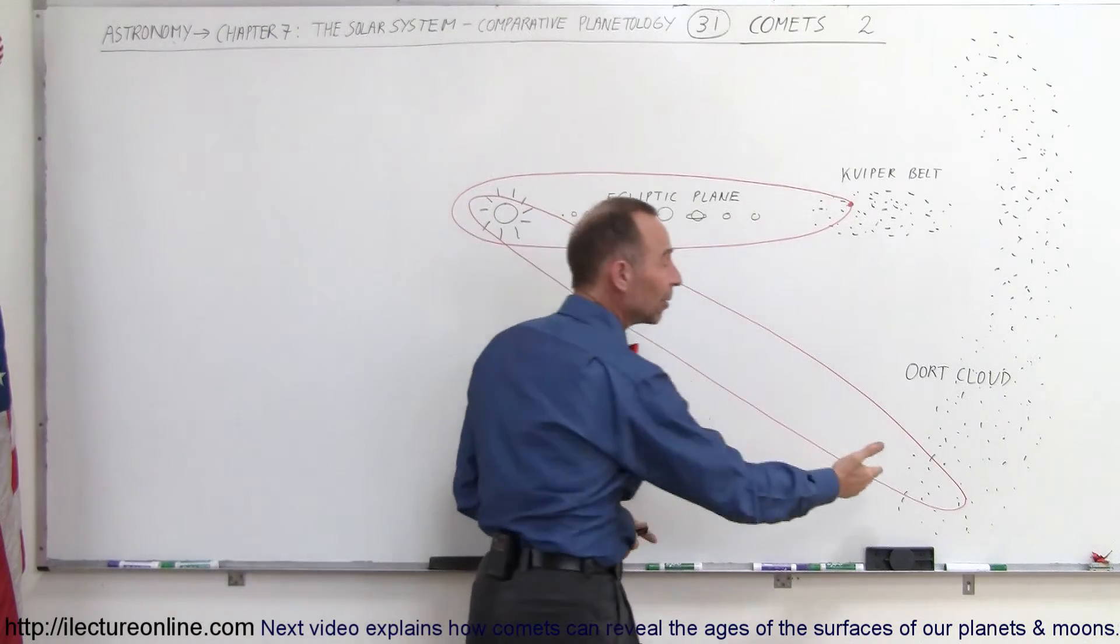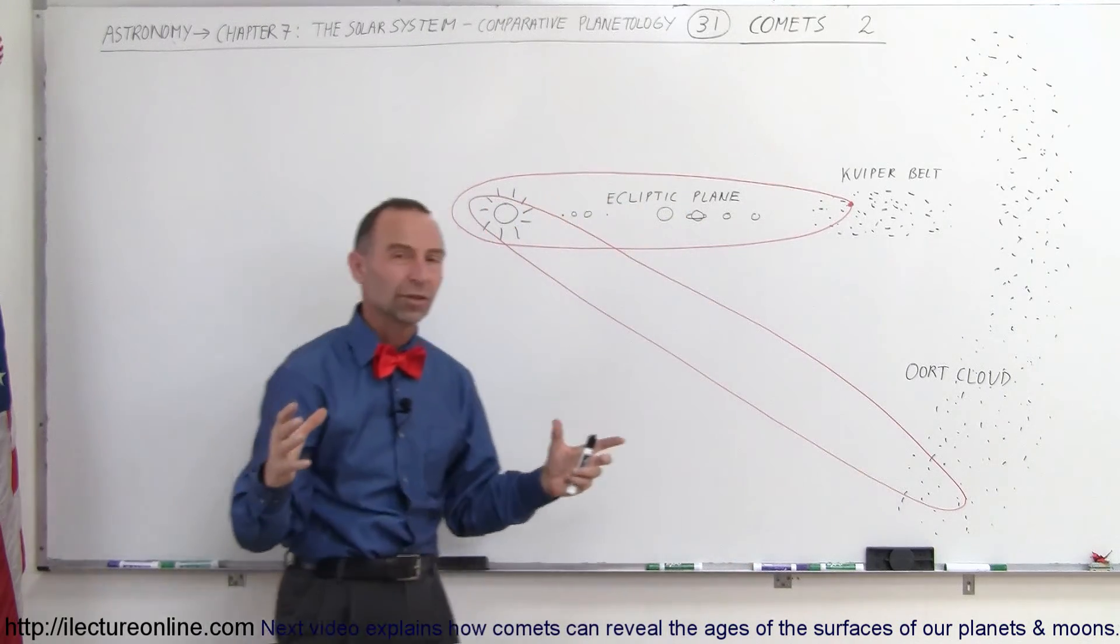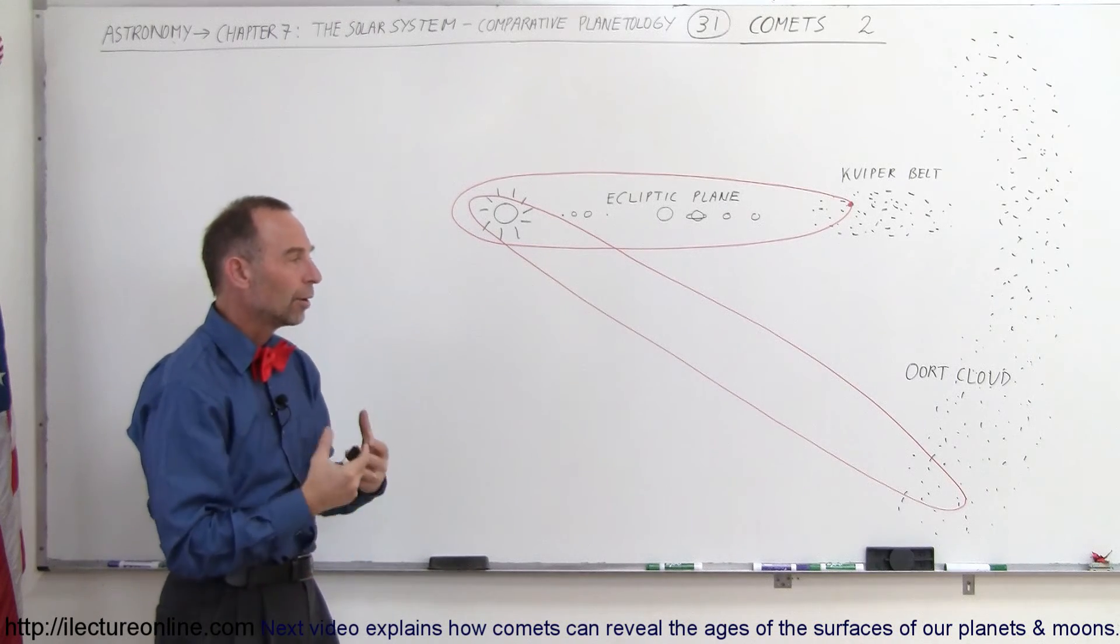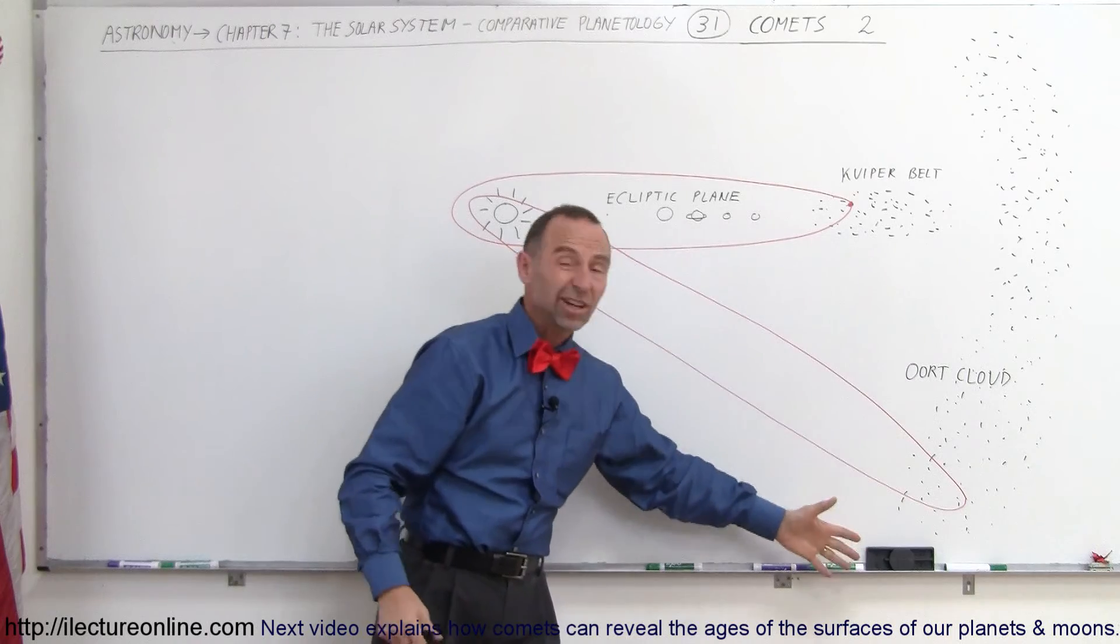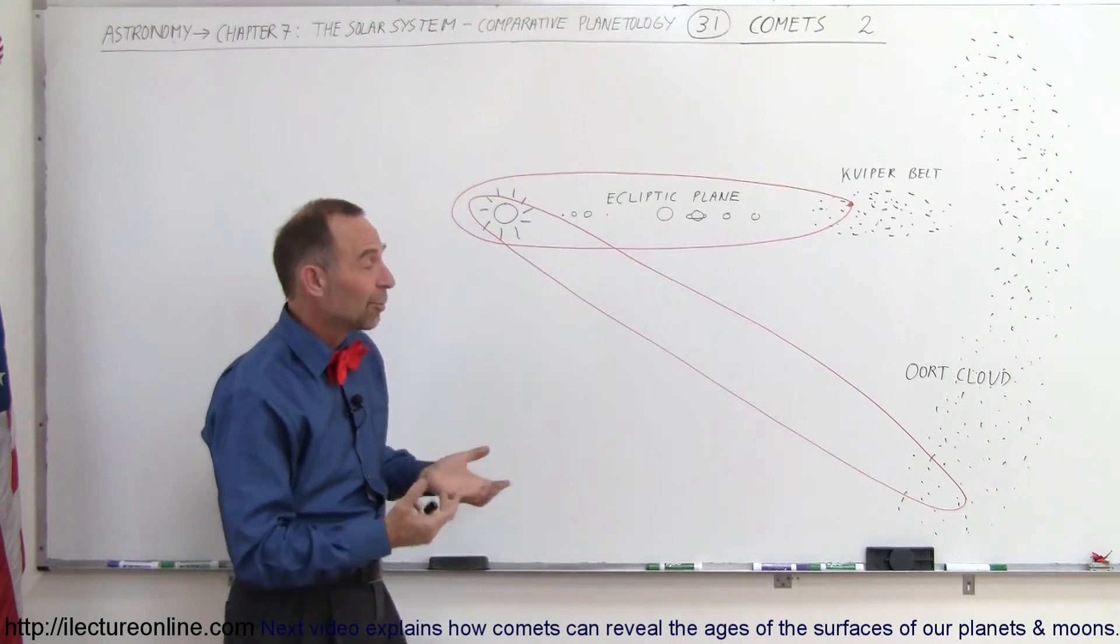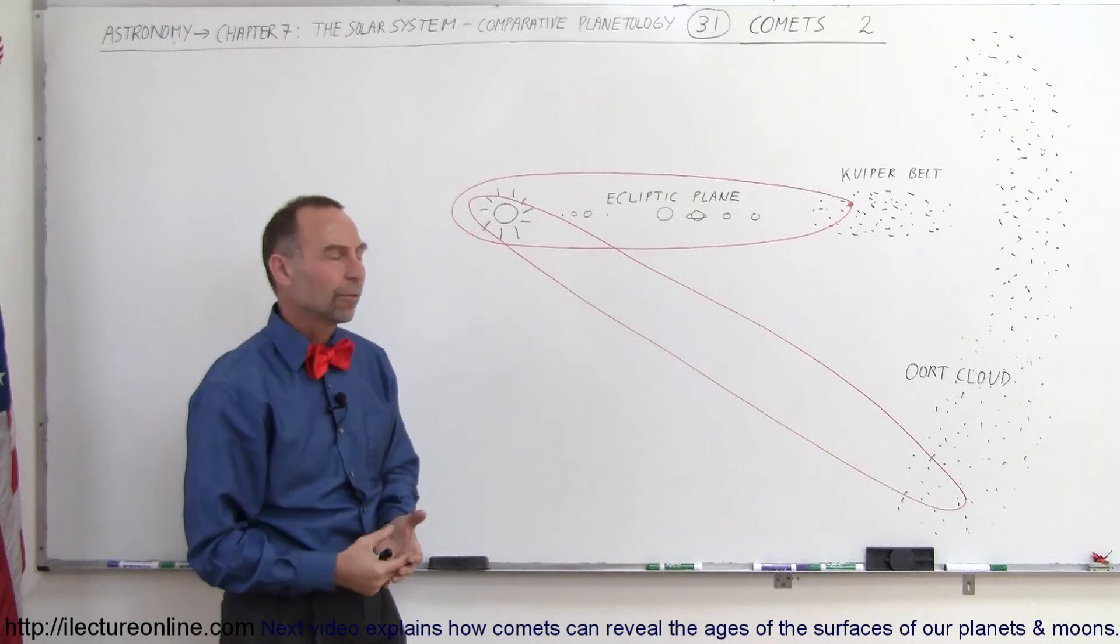And so comets then simply reveal that there's this vast region outside our inner Solar System where just billions and billions of these debris objects, that's probably the best way to describe them, debris objects, just completely engulf our Solar System.